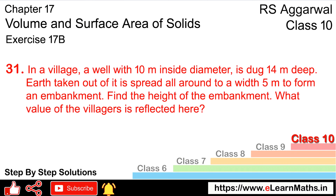Let's do question number 31 of exercise 17B, volume and surface area of solids. In a village, a well with 10 meter inside diameter is dug 14 meters deep. The earth taken out of it is spread all around to a width of 5 meters to form an embankment.